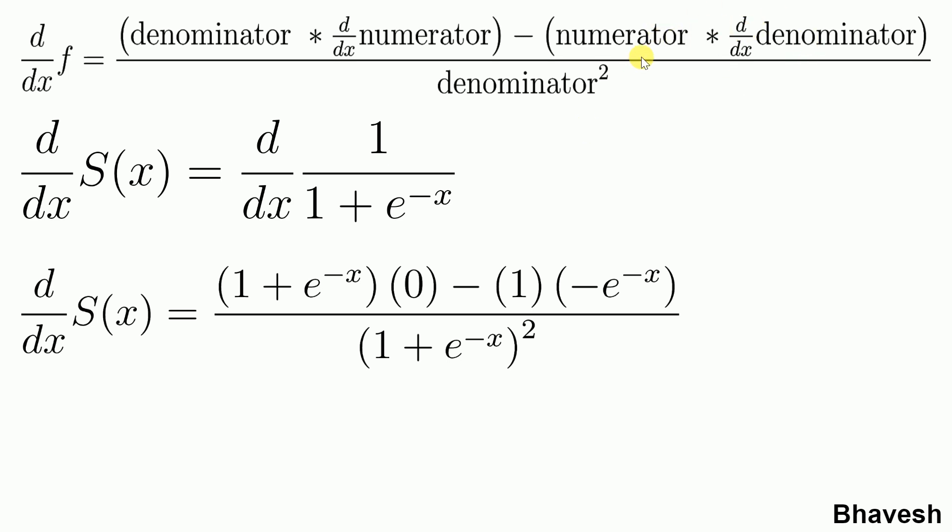I copy the numerator as it is, that is 1, and if I differentiate the denominator with respect to x, the constant term is 0 and e to the power minus x will be e to the power minus x with a negative sign, which is what I get here, and I square the denominator term.